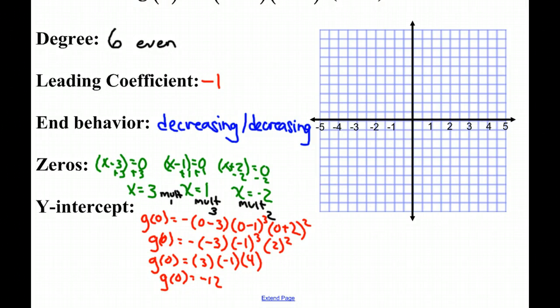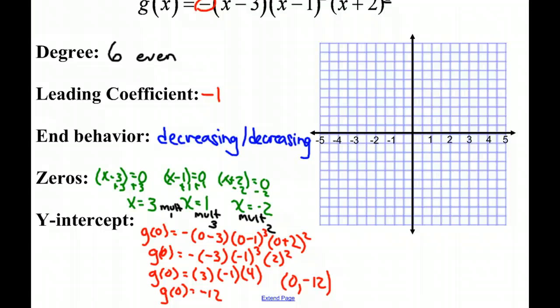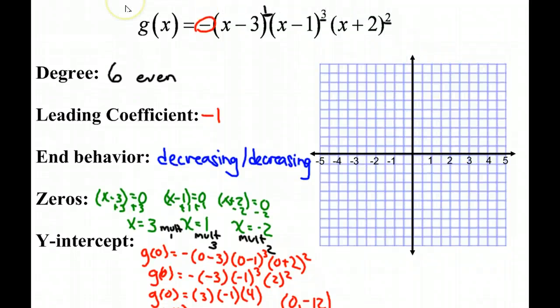So we know that there is a point, 0, negative 12. Now we want to go back and use all this information to create a graph. So we know that the zeros are at the points x equals 3, x equals 1, and x equals negative 2. We also know our y-intercept. So we can draw in this point, 0, negative 12.